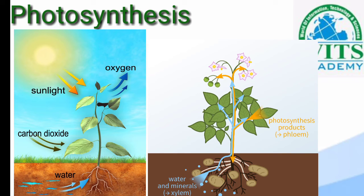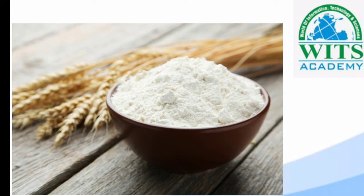Chlorophyll کیا کرتا ہے؟ یہ carbohydrates بناتا ہے۔ یہ ایک chemical change ہے جو صرف light کی presence میں ہو سکتا ہے۔ اگر ہم carbon dioxide لیں ہوا سے، water لیں soil سے، اور انہیں sunlight اور chlorophyll کی presence میں ملائیں، تو ہمیں glucose (carbohydrate کی form میں) اور oxygen ملتی ہے۔ یہ glucose leaves میں بنتا ہے اور starch میں change ہو جاتا ہے جو cells میں store ہو سکتا ہے۔